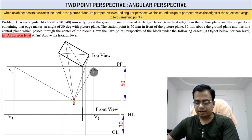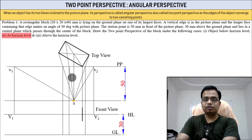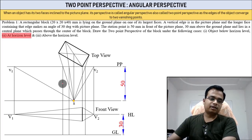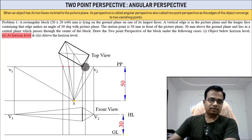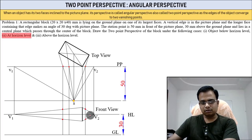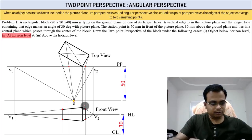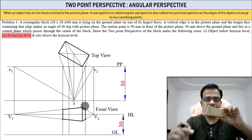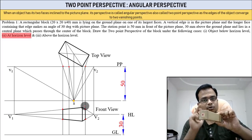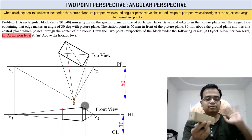With the vanishing points already established, join these two points with V2 and V1. At the level of your eyesight, the top face will not be visible and the bottom face will not be visible — only these two side faces are visible in two-point perspective.